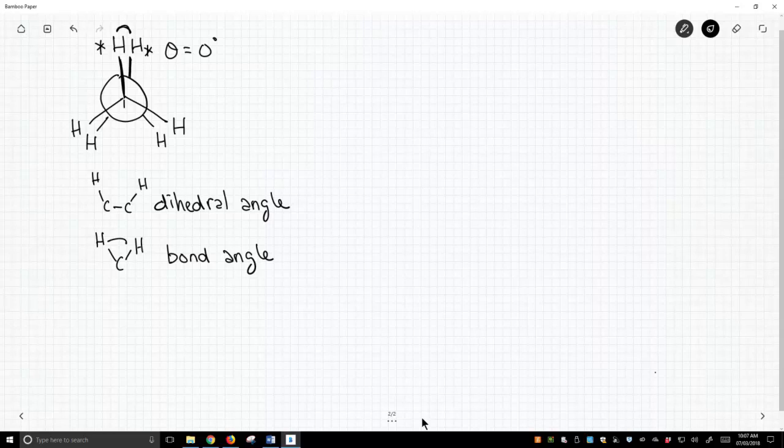Now, as it turns out, this is just one possibility for a conformation of ethane. So what we can do is we can turn this back carbon. This is actually an equilibrium.